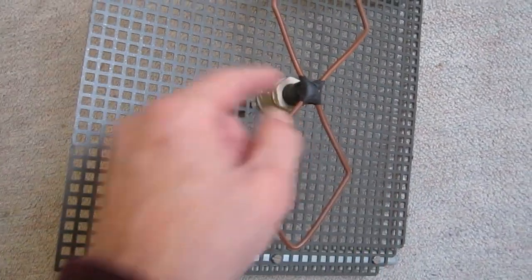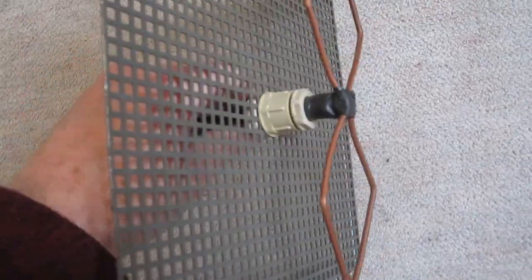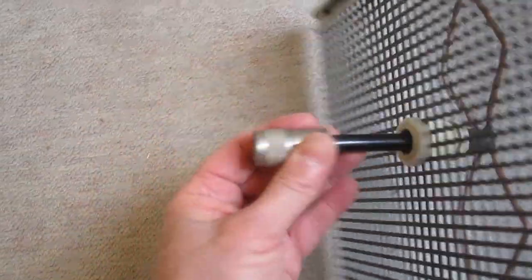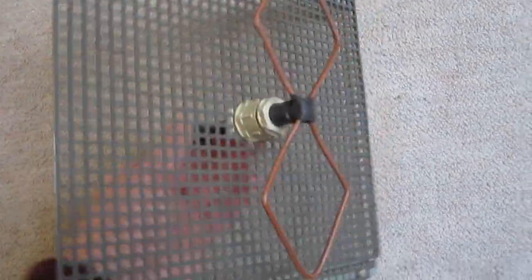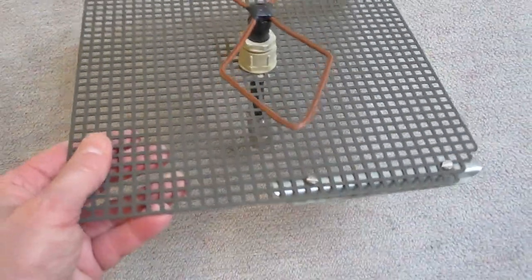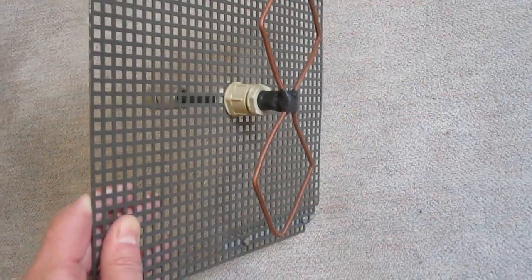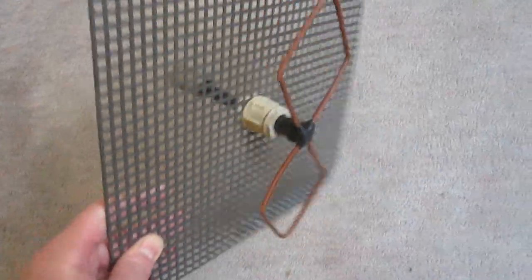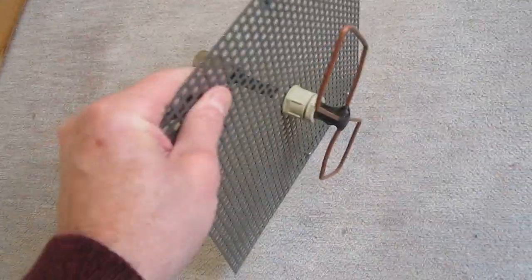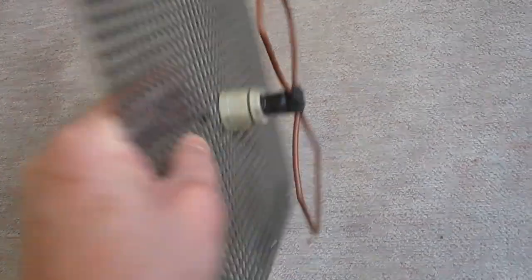And the coax cable is connected to it like this. And it has a front to back ratio of more than 20 dB and a gain of almost 8 dBi. So it's a very nice antenna.